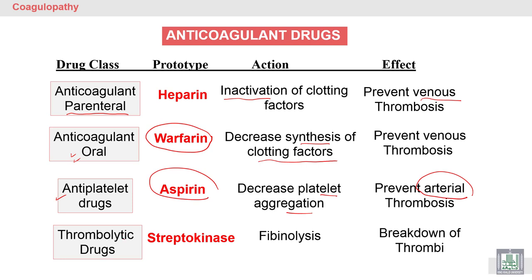Thrombolytic drugs like streptokinase — streptokinase is similar to urokinase, which is used for stimulation of fibrinolysis. It leads to the breakdown of thrombi or fibrin, resulting in fibrinolysis.